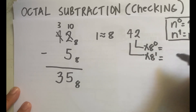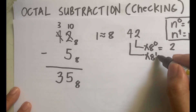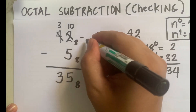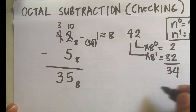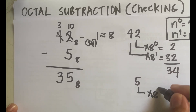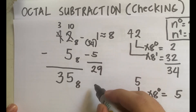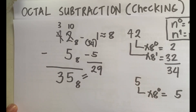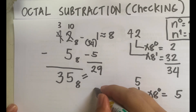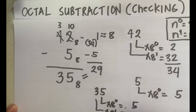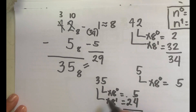So: 8 raised to 0 is 1, times 2 is 2; 8 raised to 1 is 8, times 4 is 32. Adding those: 2 plus 32 equals 34, so 42 in octal equals 34 in decimal. For 5: 5 times 8 raised to 0 equals 5. So we are subtracting 5 from 34, which gives 29. Now checking 35 in octal: 5 times 1 is 5, and 3 times 8 is 24. Adding: 5 plus 24 equals 29. Our answer is correct.